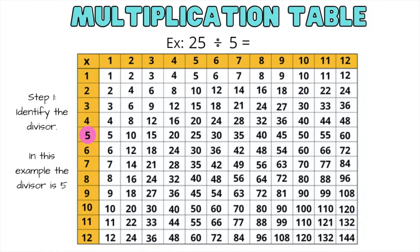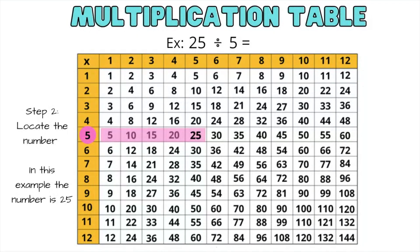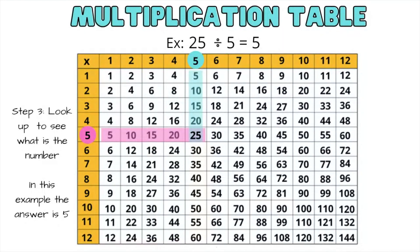Let's go ahead and divide: 25 divided by 5. Step 1: identify the divisor. In this example, the divisor is 5, so go ahead and use your finger to locate the number 5. Step 2 is to locate the dividend — in this example, the number is 25 — so slide your finger until you get to 25. Step 3: look up to see what the number is. In this example, the answer is 5. So 25 divided by 5 is 5.